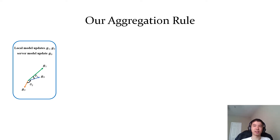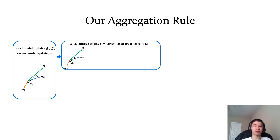Our intuition is that if a model update deviates too much from the server model update in the vector space, then the local model update is likely to be from a malicious client. For instance, g2 deviates significantly from the server model update g0, so g2 is likely to be from a malicious client. Therefore, we compute the cosine similarity between a client's local model update and the server model update, and we further use ReLU to clip the cosine similarity to obtain a trust score for the client.